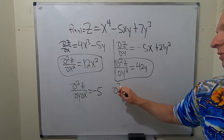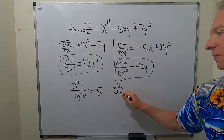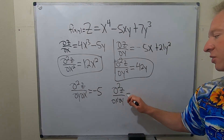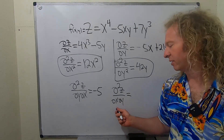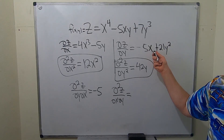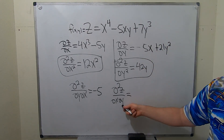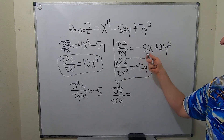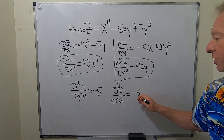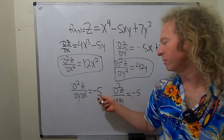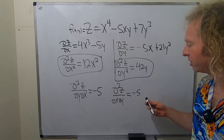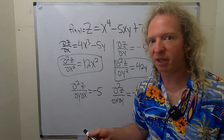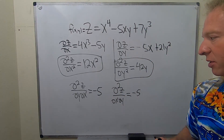Now let's do the other one: del squared z del x del y. This is read right to left. So you look here, because we already took del z del y, and you take the partial with respect to x — negative 5. Notice they're the same. That's pretty much going to happen almost every time. As long as things are continuous, these will always be equal.